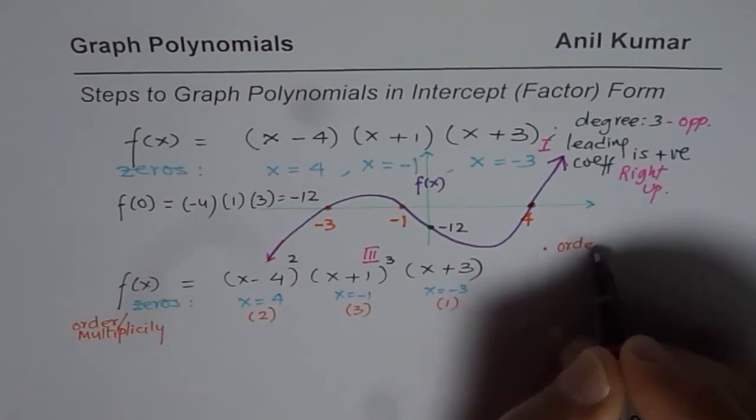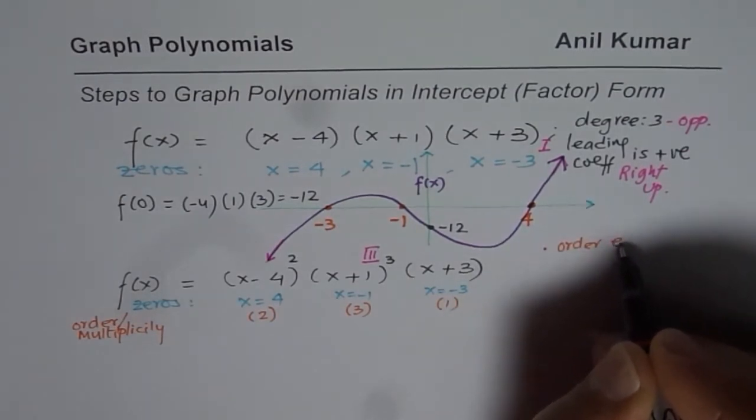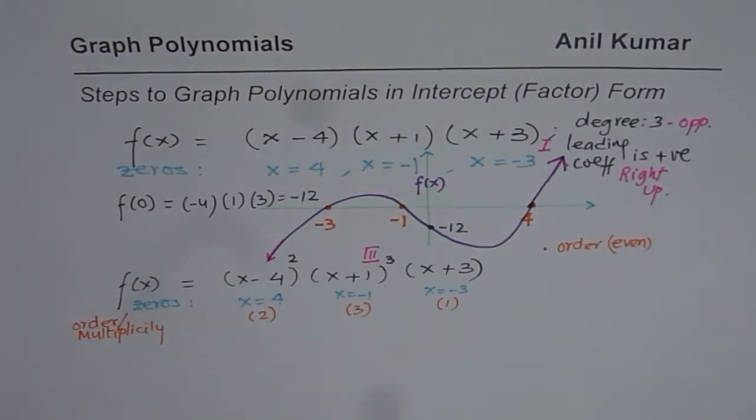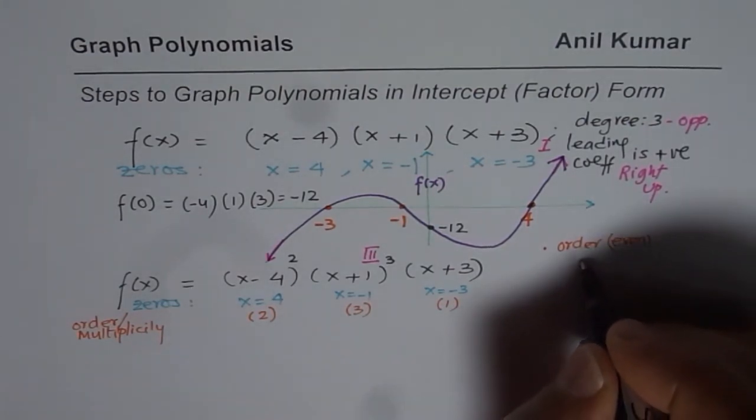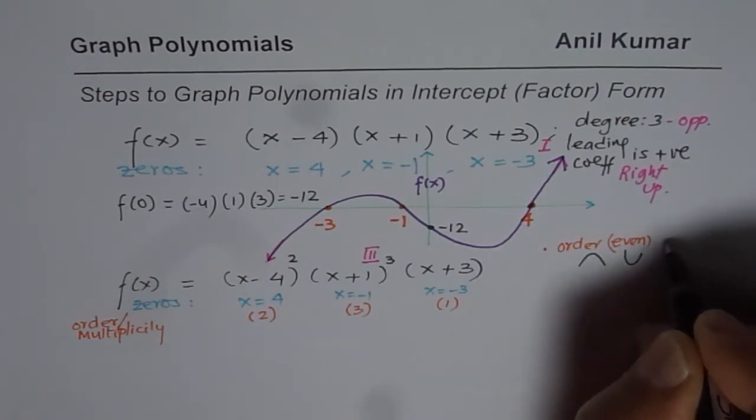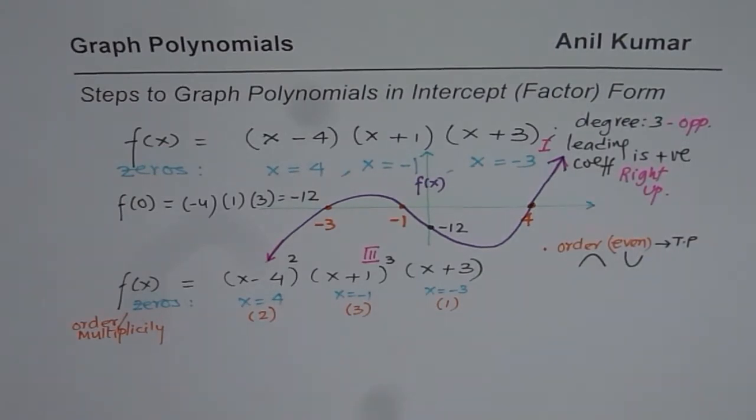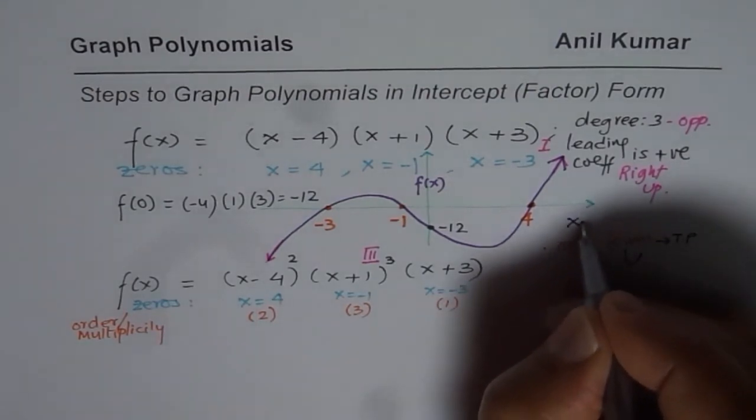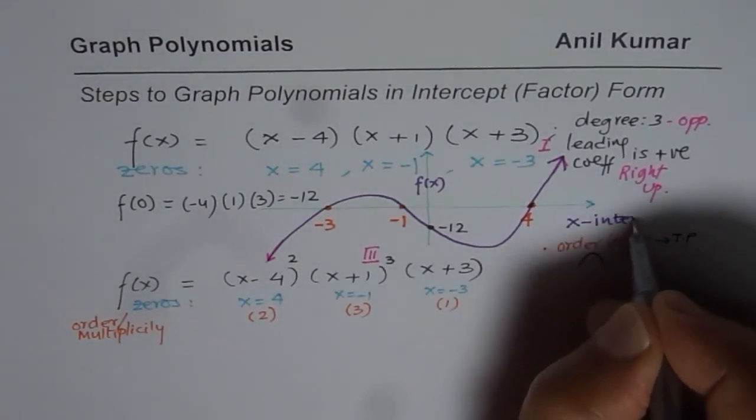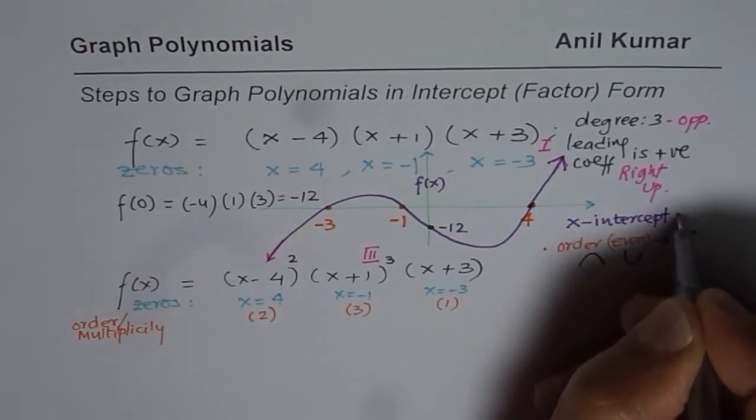If order is, let me say even. If it is even, then what happens? In that case, the graph turns. We have a turning point. It could be like this or like this. So that results into turning point at x intercept. So what we are trying to understand here, behavior at x intercept. So what happens at x intercept? This is what we are trying to understand now.